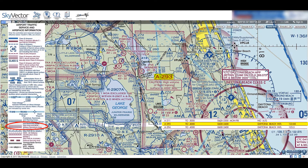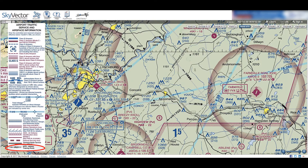If you're flying in an alert area while it's active, be especially vigilant for whatever activity occurs within it. The next special use airspace is the military training route, or MTR. These are kind of like MOAs, but they follow routes which are marked on the map with a light gray line and extend from 2 to 8 miles on either side of the line.